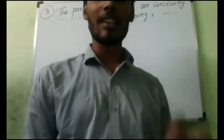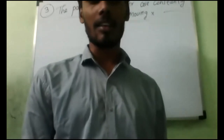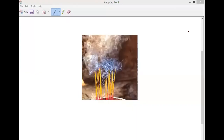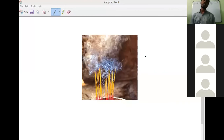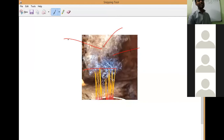The particles are moving randomly — that is the reason behind why we get the smell even when we are in the kitchen and our mother lighted the agarbatti near the entrance. The smoke released is particles only, moving in different directions. They always move in a zigzag path. This motion is called Brownian motion. This is the experiment to verify that particles are always constantly moving.